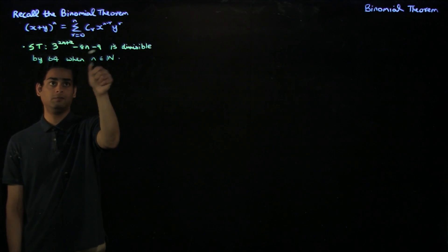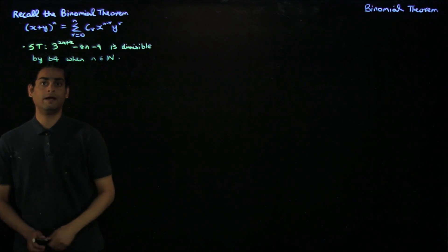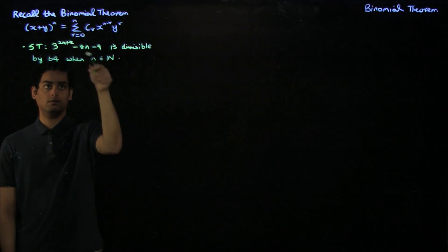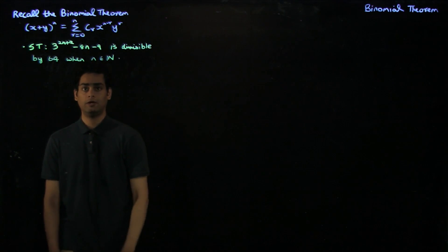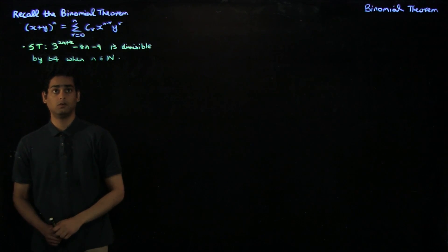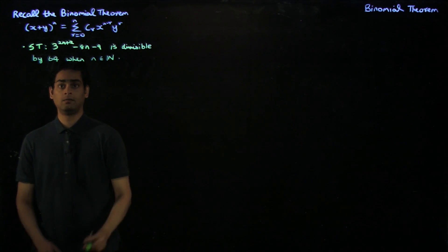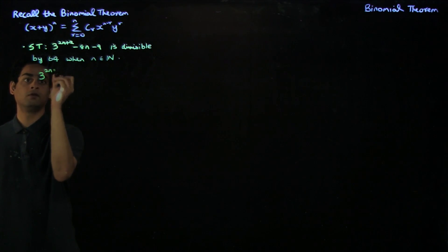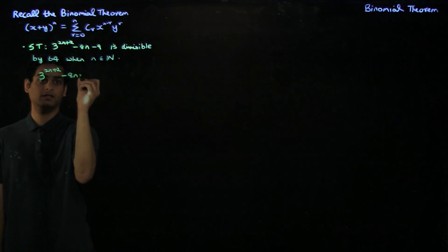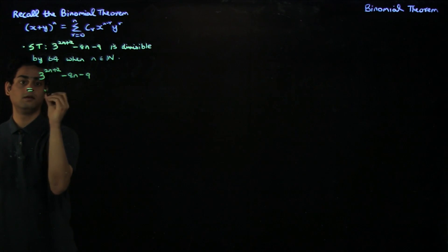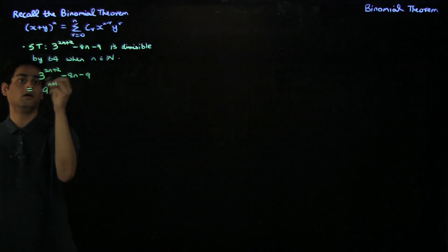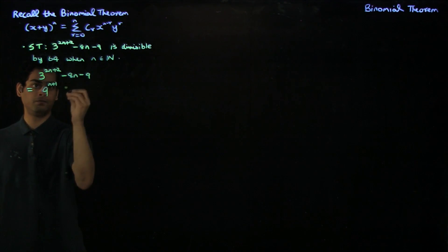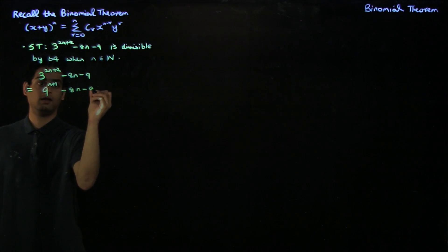We would like to create a binomial expansion to derive this result. Notice that you have an exponent here, but you also have some terms here, and these terms are in general not divisible by 64 for n being natural numbers. So we would like to get rid of these terms and leave the remaining term to be divisible by 64. We can re-express: 3^(2n+2) - 8n - 9 can be written as 9^(n+1) - 8n - 9, where I've written 3^2 as 9.